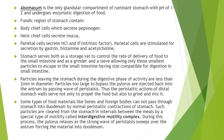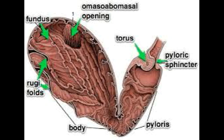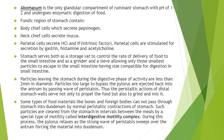After the omasum, food enters into the abomasum, which is the only glandular compartment of the ruminant stomach, with a pH of 1 to 2, where it undergoes enzymatic digestion. The fundic region of the abomasum contains body chief cells, neck chief cells, and parietal cells. Body chief cells secrete pepsinogen, neck chief cells secrete mucus, and parietal cells secrete hydrochloric acid and intrinsic factor. Parietal cells are stimulated for secretion by gastrin, histamine, and acetylcholine.